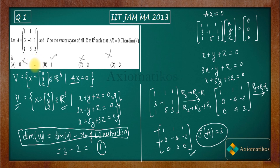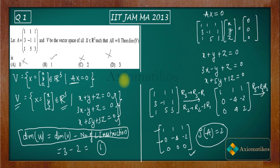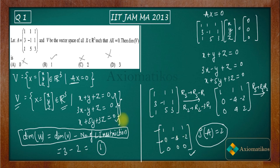To summarize: we needed to find the dimension of subspace V. The formula is: dim(subspace) = dim(vector space) - number of LI restrictions. We formed matrix A from the three restriction equations and found its rank to be 2, meaning only two restrictions are LI. Therefore, dim(V) = 3 - 2 = 1. Thank you.